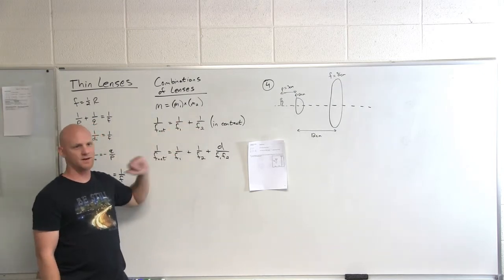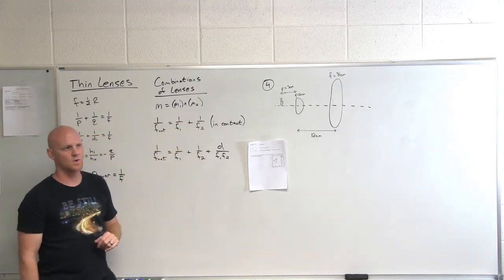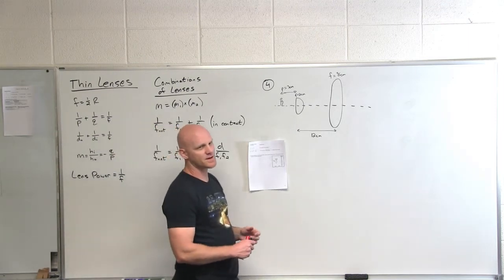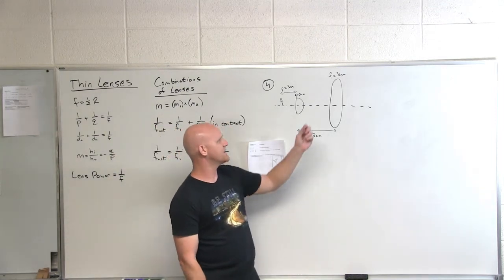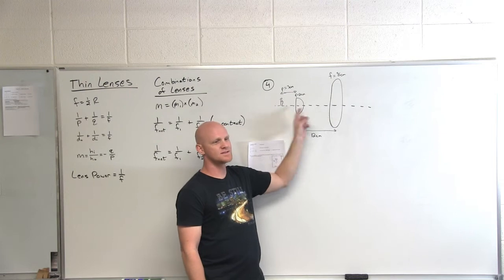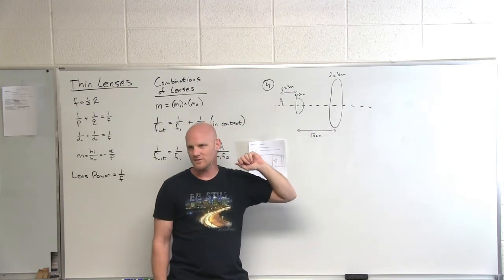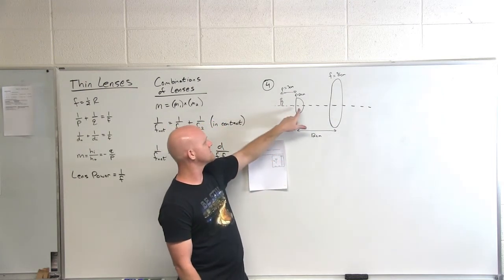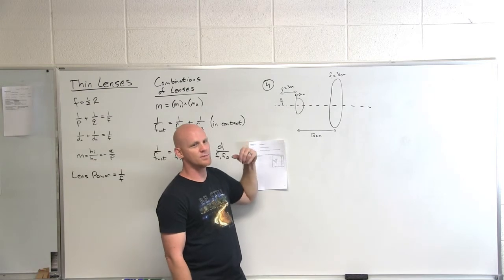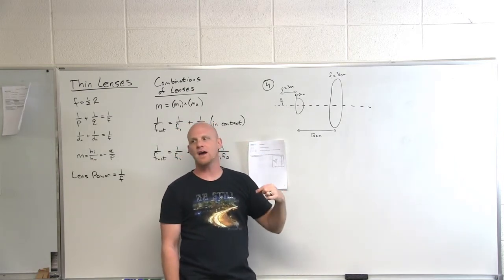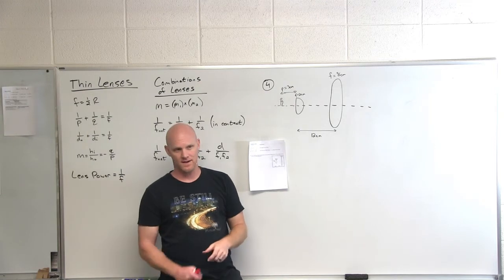But they're plug and chug, nothing crazy here. Your classic kind of problem dealing with a combination of lenses deals with the latter case here where you've got two lenses separated by a certain amount of space. And you're going to use the first lens to form an image and that image is then going to be the object for the second lens.